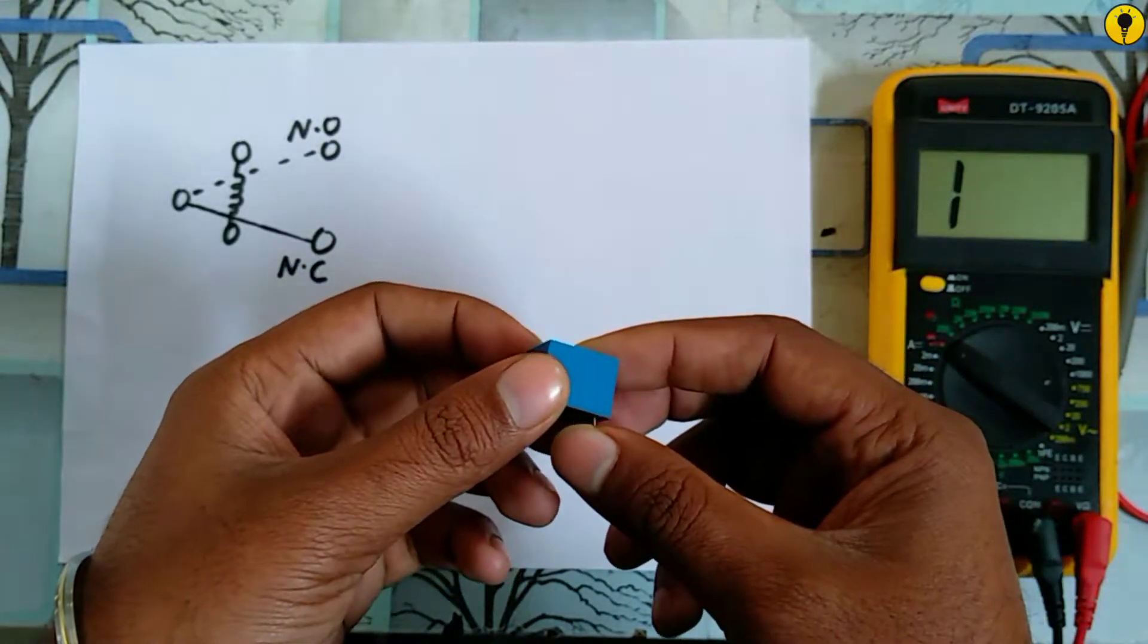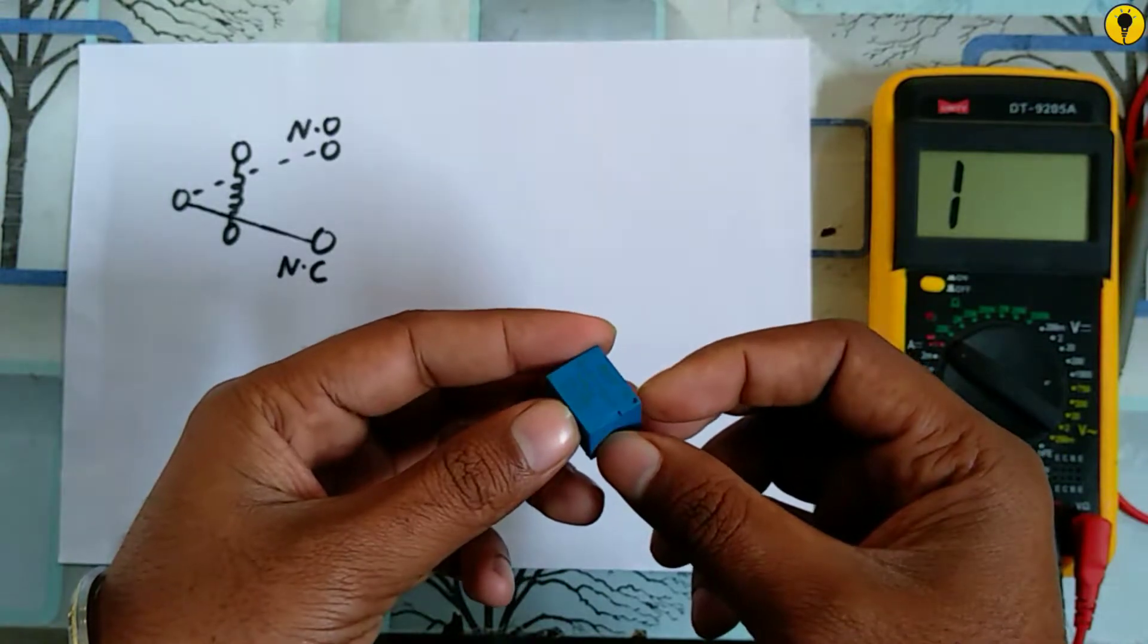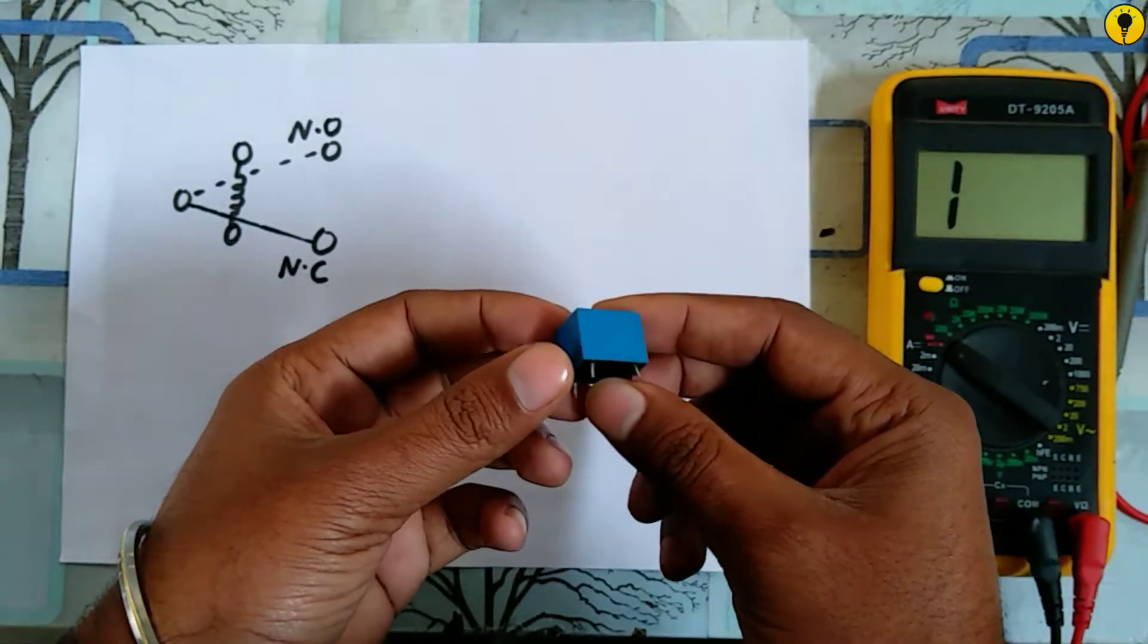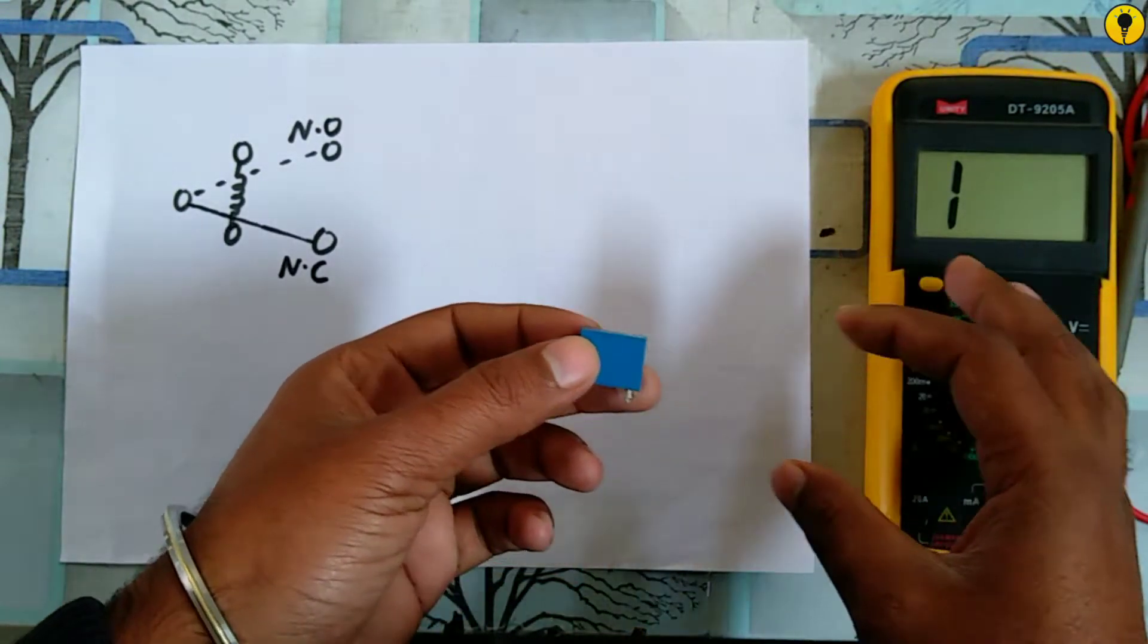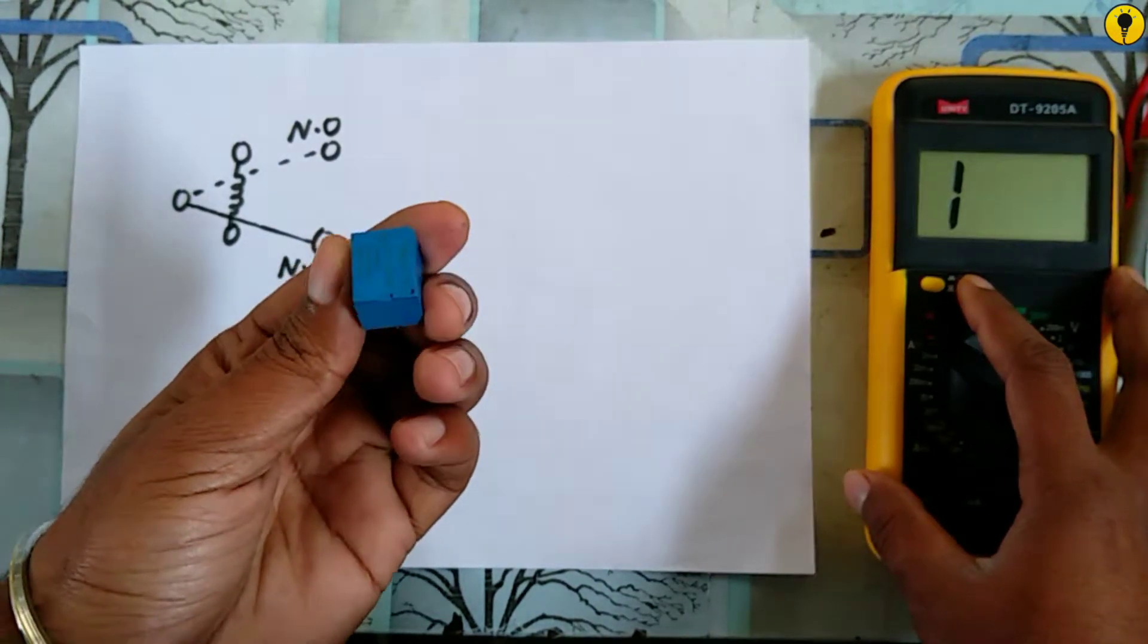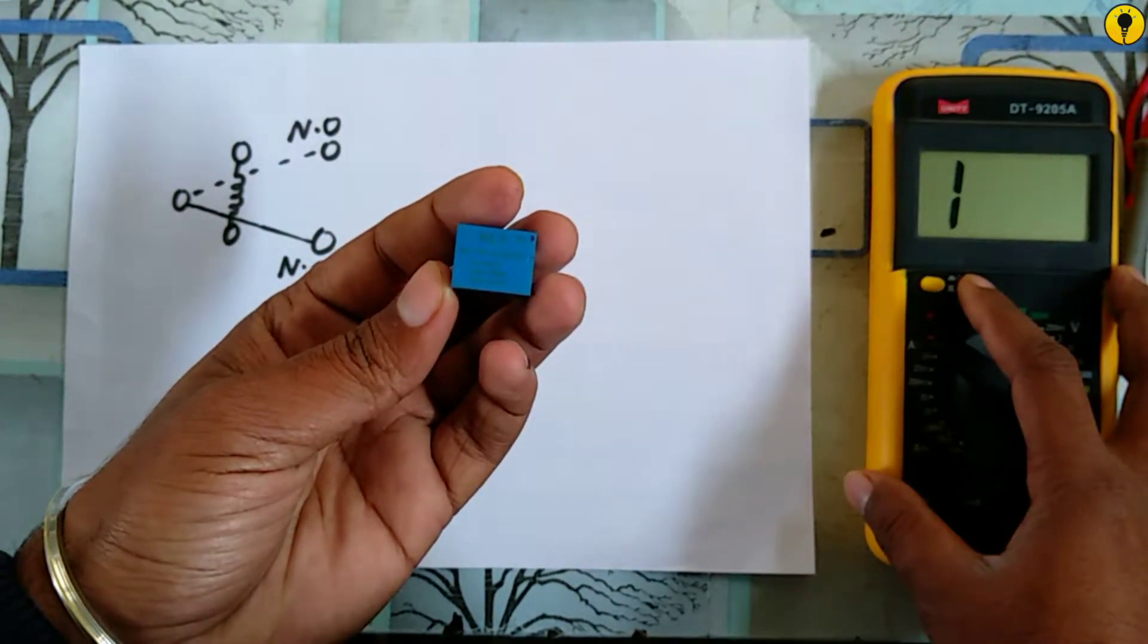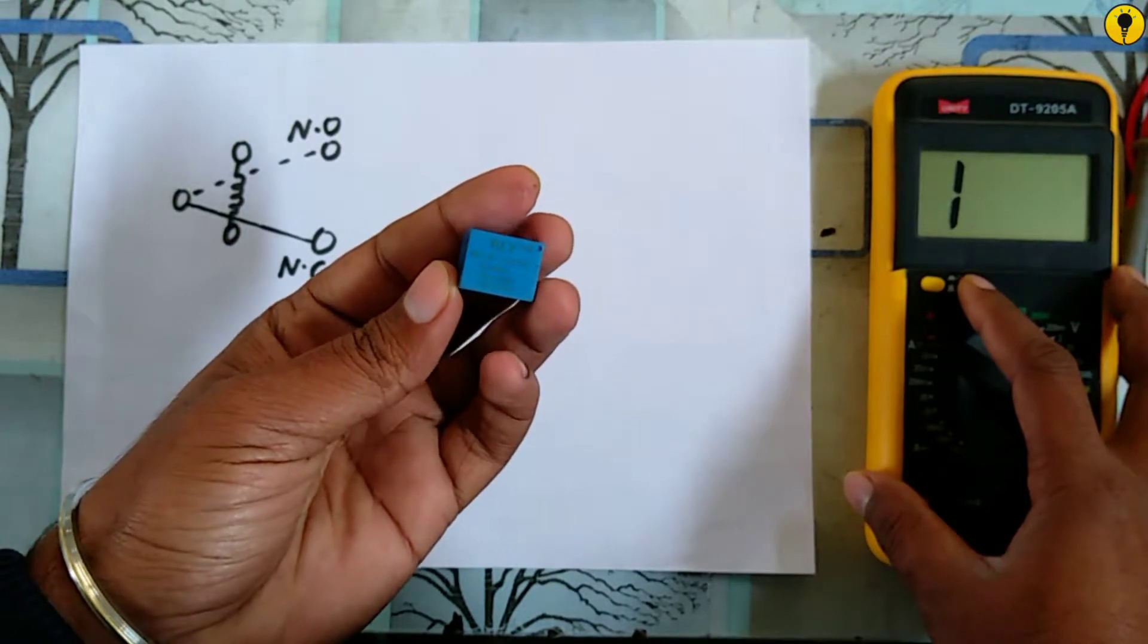Hello guys, this is a 12V DC relay. In this video we will learn how to check this relay with the help of a multimeter. It is an electromagnetic switching device. By applying 12V, it makes and breaks the contacts which further turn on or off the circuit.